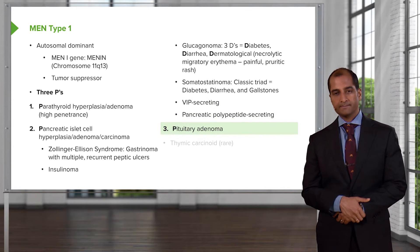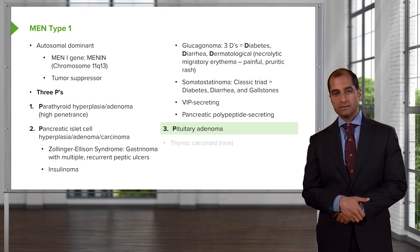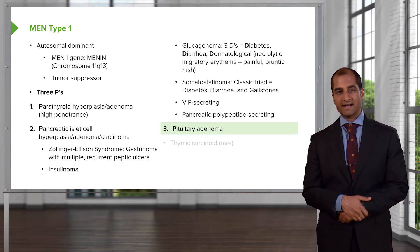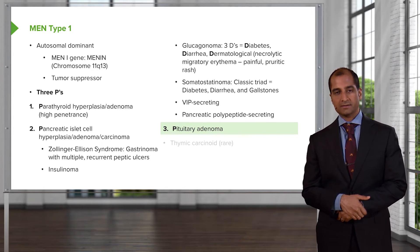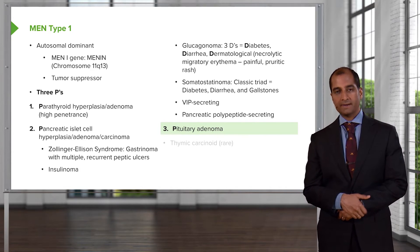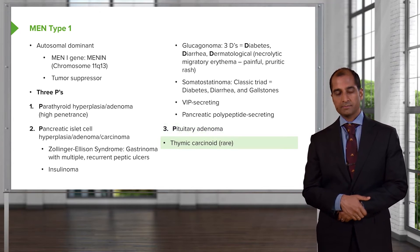The 'pit' is pituitary adenoma. The most common functioning type — in which the hormone being released will in fact be prolactin — will be a prolactinoma. Under MEN1: pan for pancreatic islet cell tumor, para for hyperparathyroidism and hypercalcemia, and pit for pituitary adenoma.